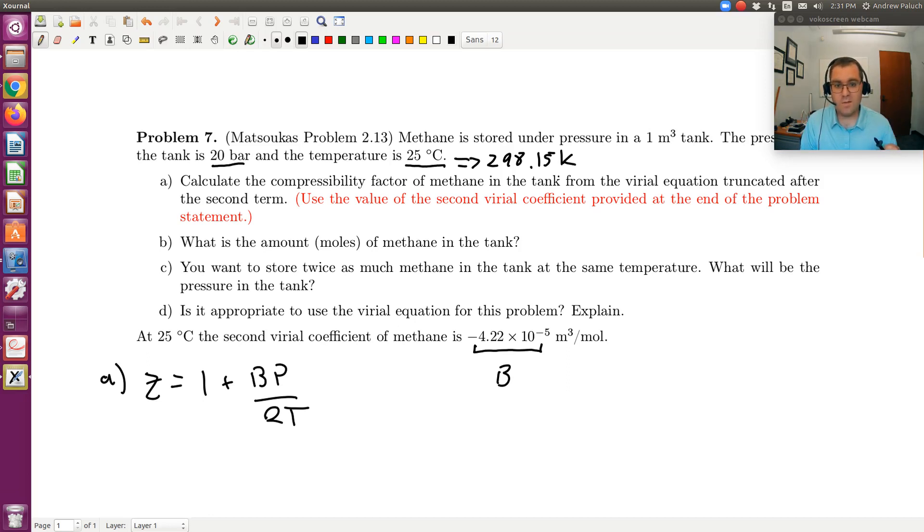The only note where things are going to go wrong is keep track of your units. Here, B is an SI unit. Temperature, I convert to Kelvin is SI. R, 8.314 joules per mole Kelvin is SI. So you just need to take your pressure then and convert to pascals. So 1 bar is 1 times 10 to the 5 pascals. Just make sure you're using consistent units so that that term BP over RT is dimensionless. So hopefully you can get that one.